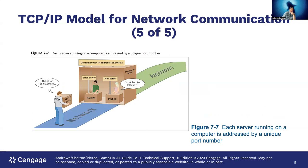Here we're looking at a packet traveling up on the network reaching its final destination. The receiving computer checks what port the packet is going to — in this case port 80, the web server. Different ports are available, and the web server says 'I'm at port 80, I'll take it.' It's a simplified illustration of how port addressing works.